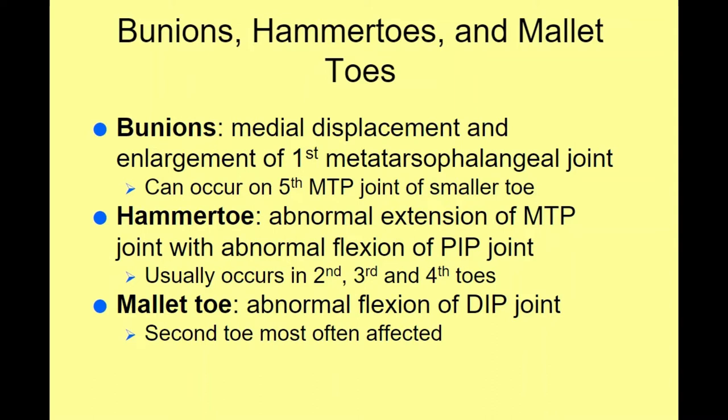In extreme hammer toe cases, the toe can extend out over the front of a shoe or sandal. Mallet toes involve abnormal flexion of the joint, usually in the second toe. Regarding the distinctions: a mallet toe involves the distal joint bending downward; a hammer toe involves bending at the proximal interphalangeal (PIP) joint; and a claw toe is a combination — pulling up of the toe at the base combined with the hammer toe-type bending — considered a more serious diagnosis.